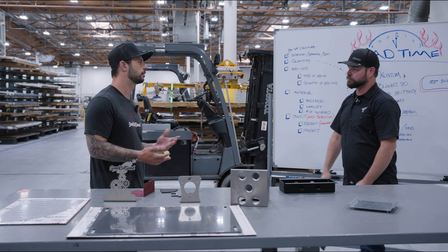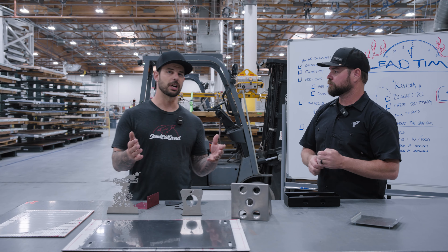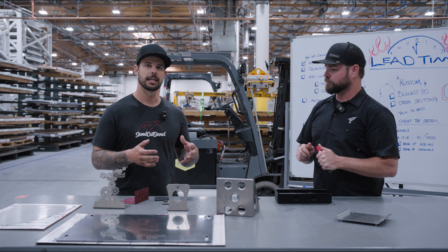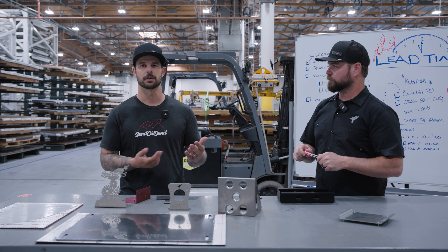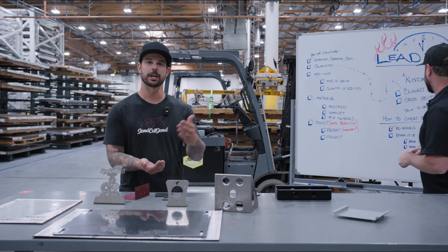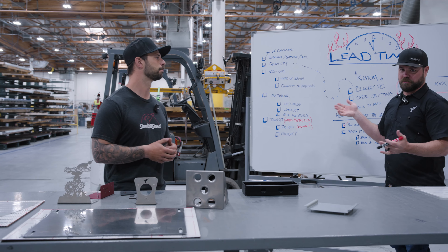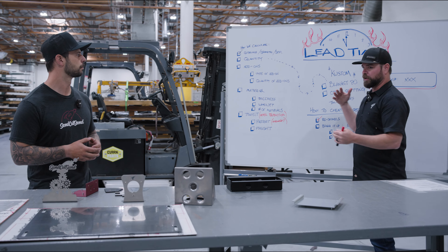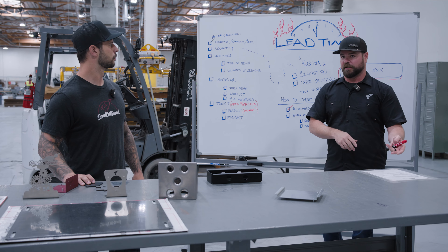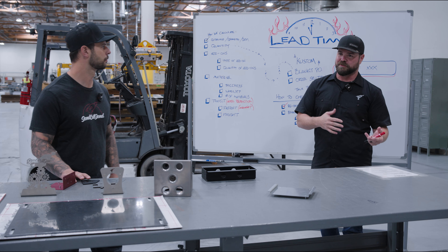Quantity: if you do want 10,000 parts, sometimes what we can do — and you can work directly with our sales team — is break up those orders. Maybe we do releases of 1,000 at a much quicker pace than doing a 10,000-part job at one time. We call it a blanket PO or blanket purchase order. It might be better to send you 1,000 units a week over 10 weeks, versus waiting a few weeks to get all 10,000 at the same time.